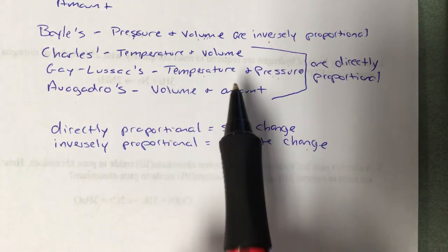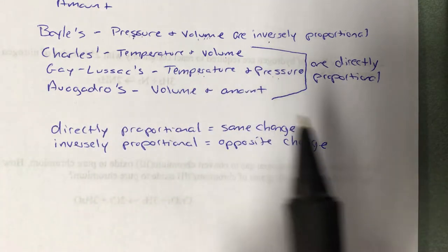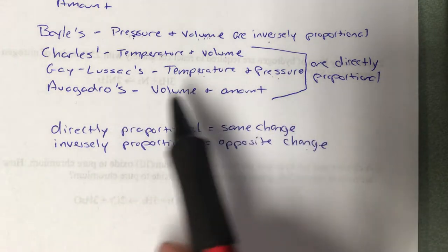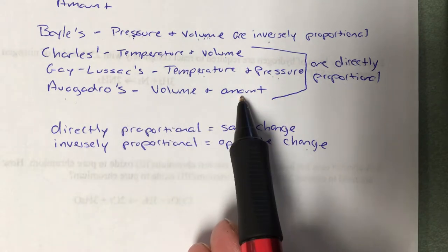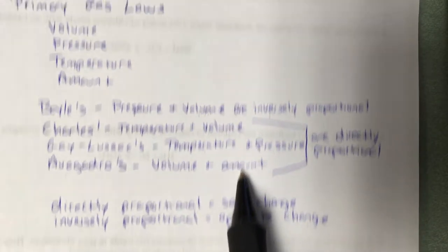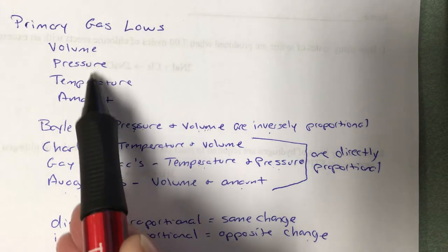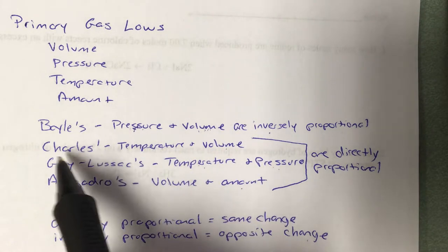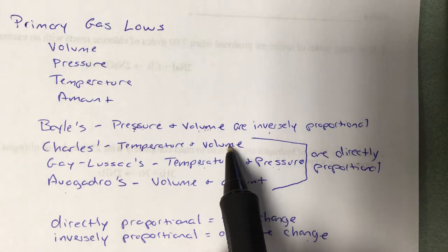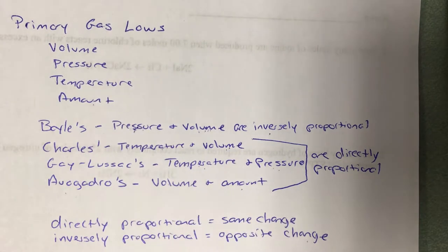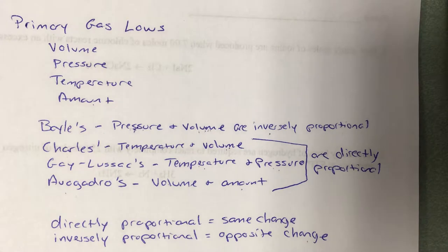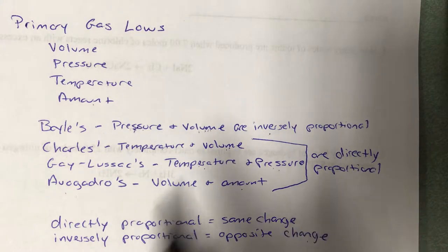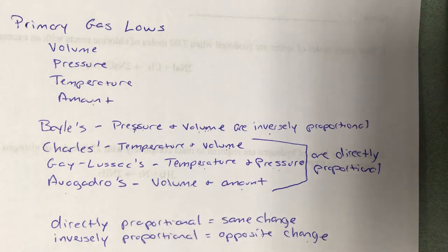In all of these laws, whichever variables are not covered by the law have to be constant. Since Avogadro's law covers volume and amount, the other two variables — temperature and pressure — have to be constant. Charles' law deals with temperature and volume, so the other two variables, pressure and amount, have to stay constant. For all these laws to work, the other two variables have to be constant.